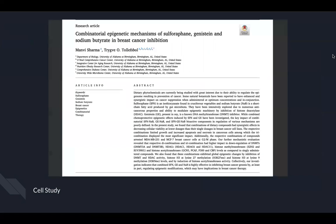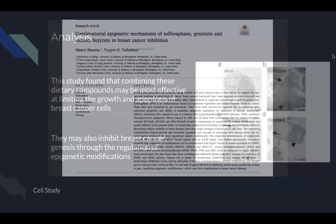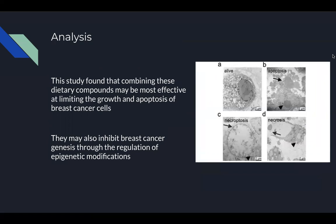The second study aimed to determine whether combining certain dietary compounds could have an inhibitory effect on breast cancer. In this study, cells were treated with sulforaphane, genistein, and sodium butyrate for combined epigenetic effects. It was found that all three compounds combined are effective treatments for regulating epigenetic modifications of breast cancer, rather than each compound acting on its own. Combining these dietary compounds may be most effective at limiting the growth and apoptosis of breast cancer cells.